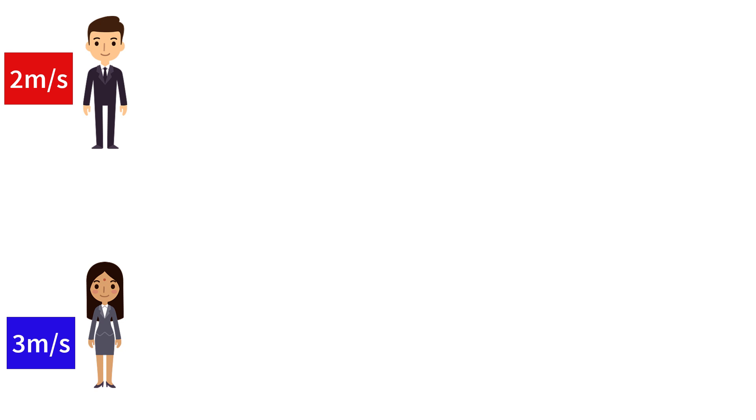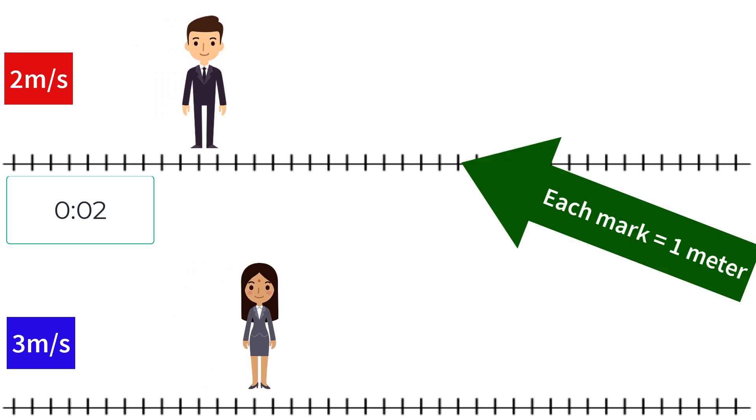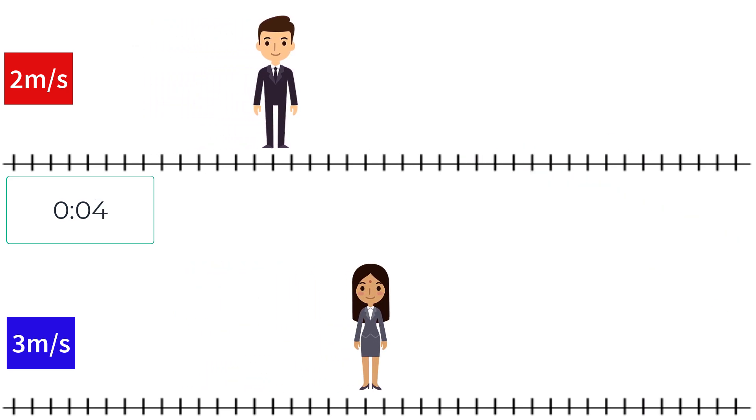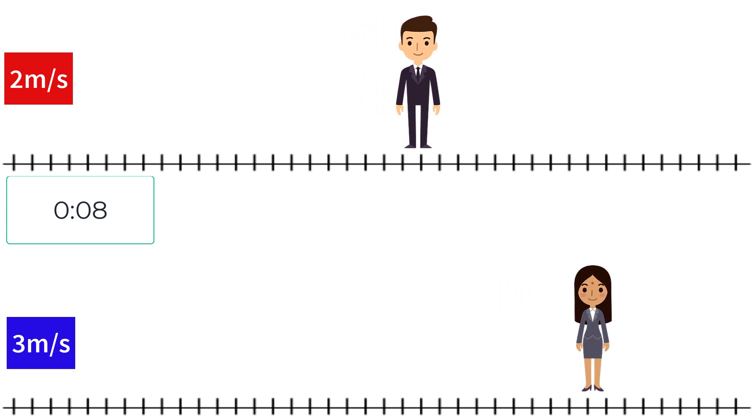See if this example helps. The person standing at the top of the screen will move at 2 meters per second, and the person standing at the bottom of the screen will move at 3 meters per second. Velocity tells us how much position will change each second. The person with a velocity of 3 meters per second will move 3 meters each second, and the person with a velocity of 2 meters per second will move 2 meters each second.